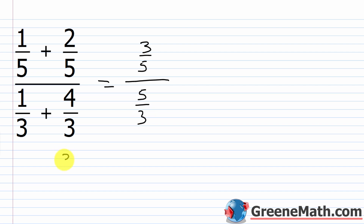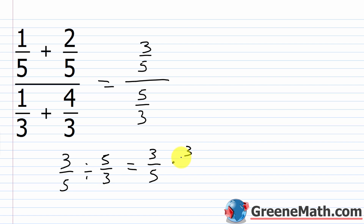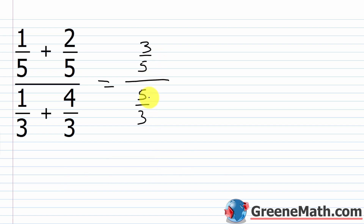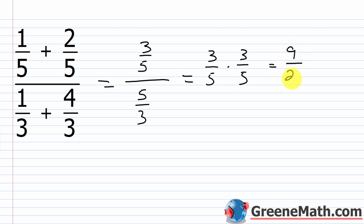If you saw that problem written as 3/5 divided by 5/3, you would take 3/5 and leave it unchanged, then multiply by the reciprocal of the second fraction. The reciprocal of 5/3 is 3/5. So 3/5 stays the same, and we multiply by 3/5. Then 3 times 3 is 9, and 5 times 5 is 25, so we get 9/25 as our answer.